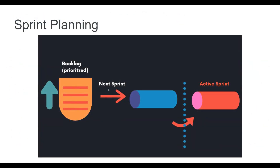Looking at this diagram, it's important to understand that the product backlog is always prioritized. The scrum team always looks at the top two, three, or four stories at the top of the product backlog, making sure they are clear and understood — as a developer or tester, you start understanding how to write test cases for each user story. This way you prepare the next sprint while the active sprint is the one the team is currently finishing.